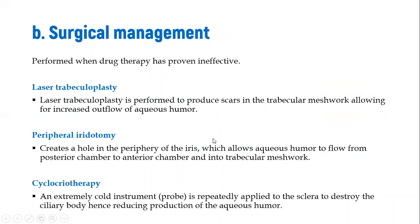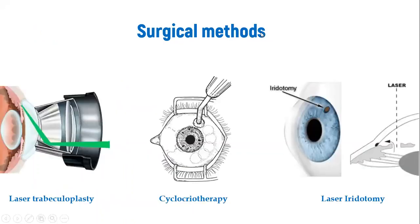Surgical methods include laser trabeculoplasty, where laser is applied to the trabecular meshwork to create scarring and make it more porous, increasing outflow of aqueous humor. Peripheral iridotomy involves using a laser to make a hole through the iris, enabling aqueous humor to flow more easily from the posterior chamber to the anterior chamber. Cyclocryotherapy uses a very cold probe applied to the sclera at the ciliary body to destroy ciliary body cells and reduce aqueous humor production.